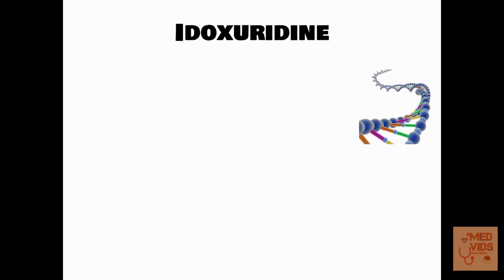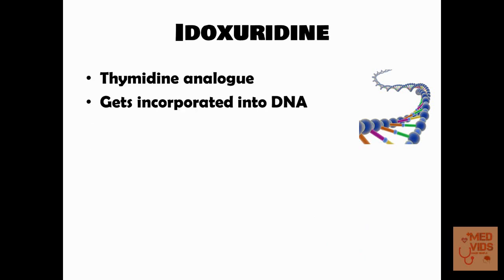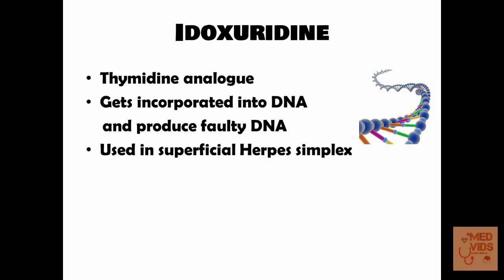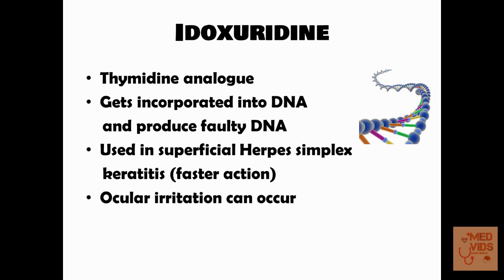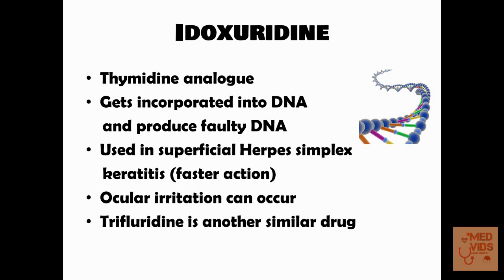Idoxuridine is a drug that inhibits DNA synthesis in viruses. It is a thymidine analog that gets incorporated into viral DNA, leading to the production of faulty DNA. It can be used in herpes simplex keratitis where it has faster action compared to acyclovir, but it has associated side effects like ocular irritation. Trifluridine is a similar drug to idoxuridine with the same mechanism of action and similar adverse effects.